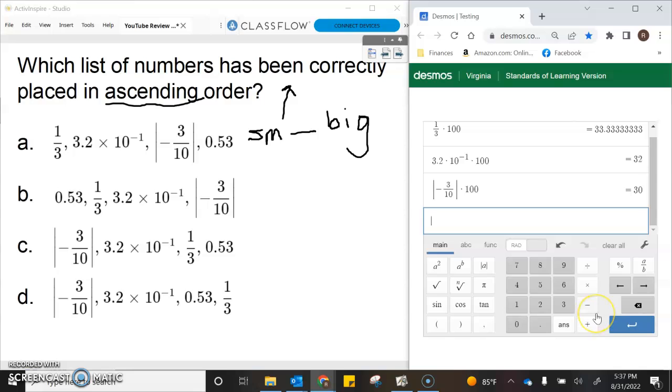And then finally we have 0.53, and we're going to make it a percent by also multiplying by 100.